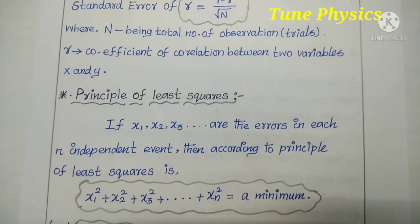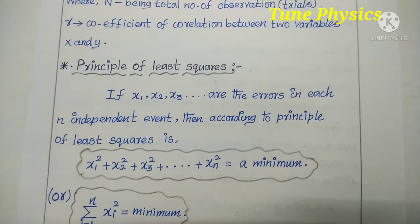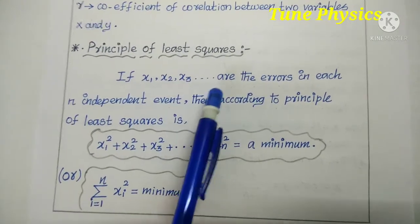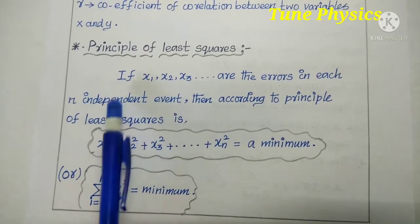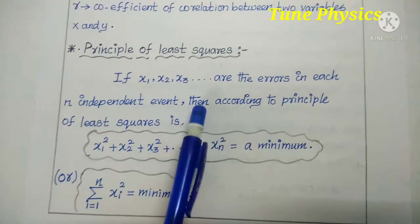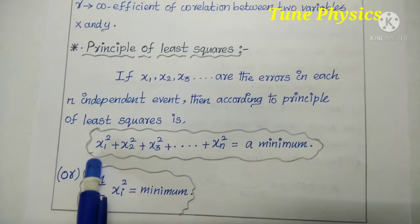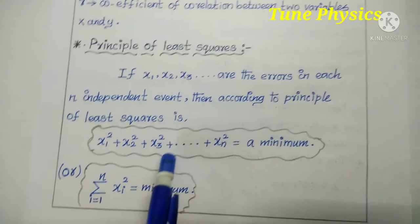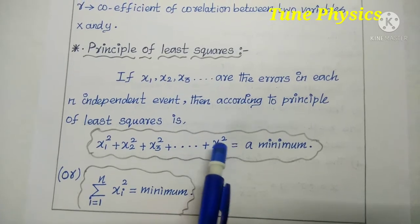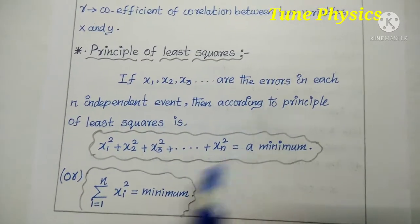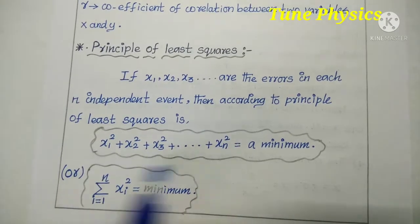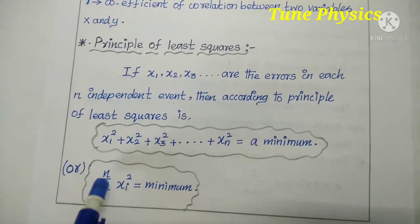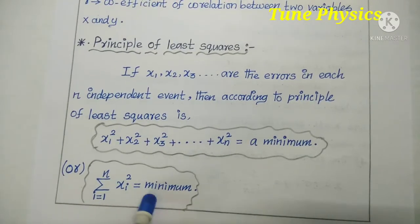Next, it is the heading: principle of least squares. If x1, x2, x3, etc. are the errors in each n independent event, then according to the principle of least squares, x1 squared plus x2 squared plus x3 squared plus ... plus xn squared is equal to minimum. So it is the summation formula: summation i equals 1 to n of xi squared is equal to minimum.